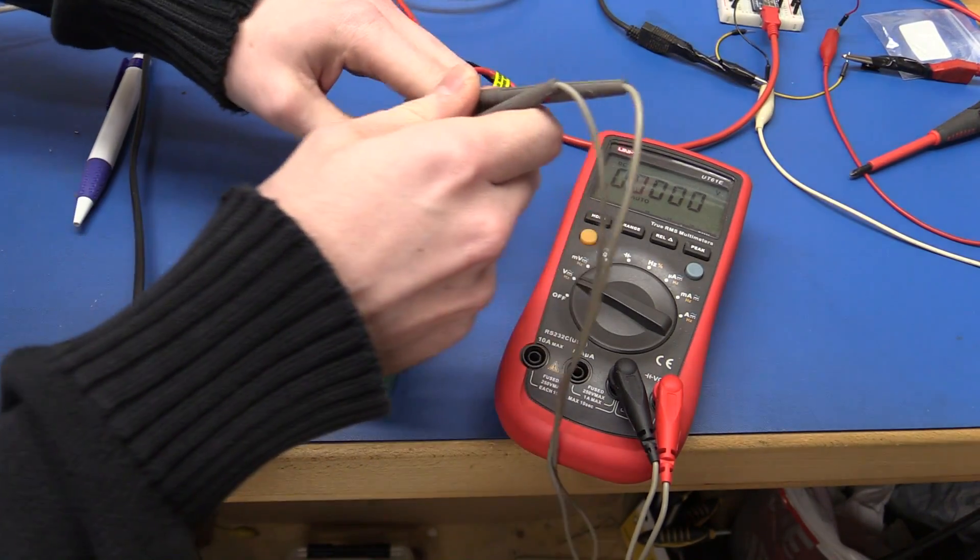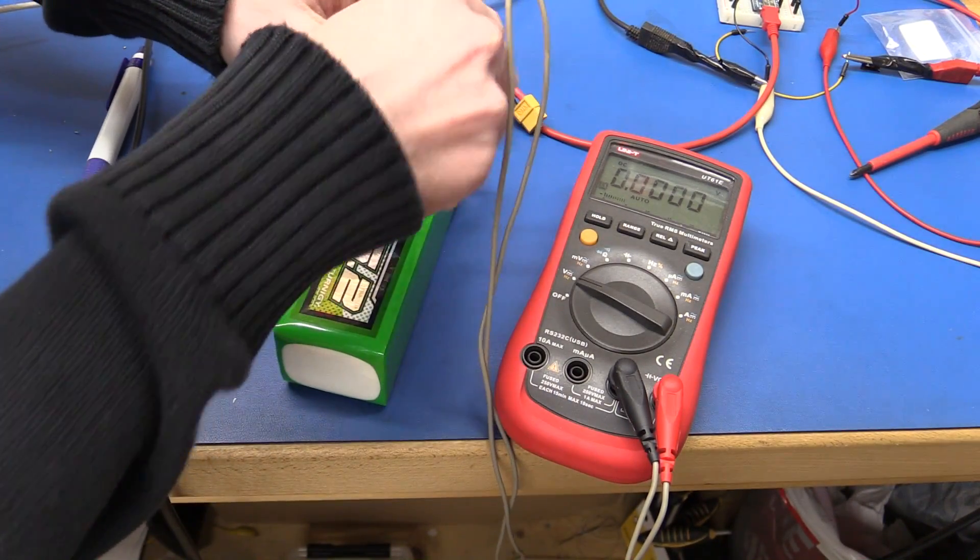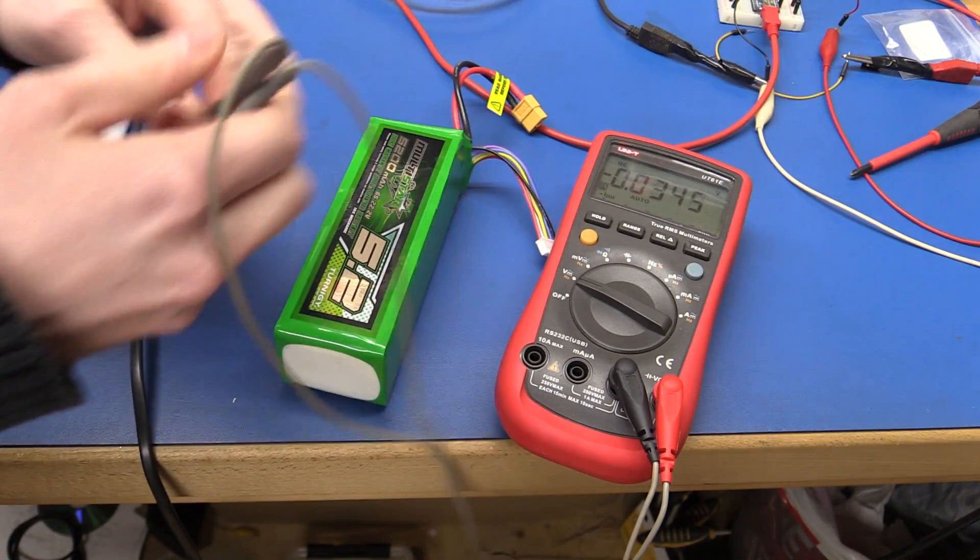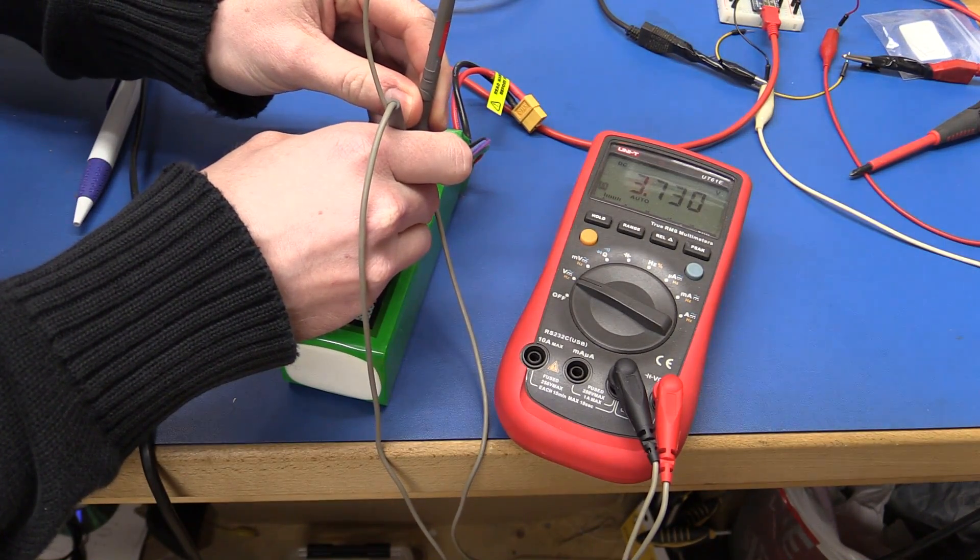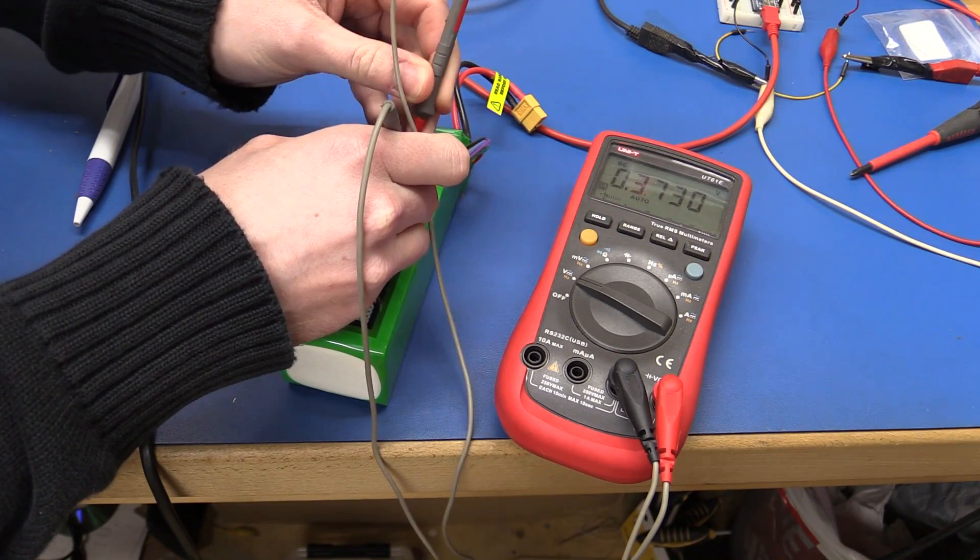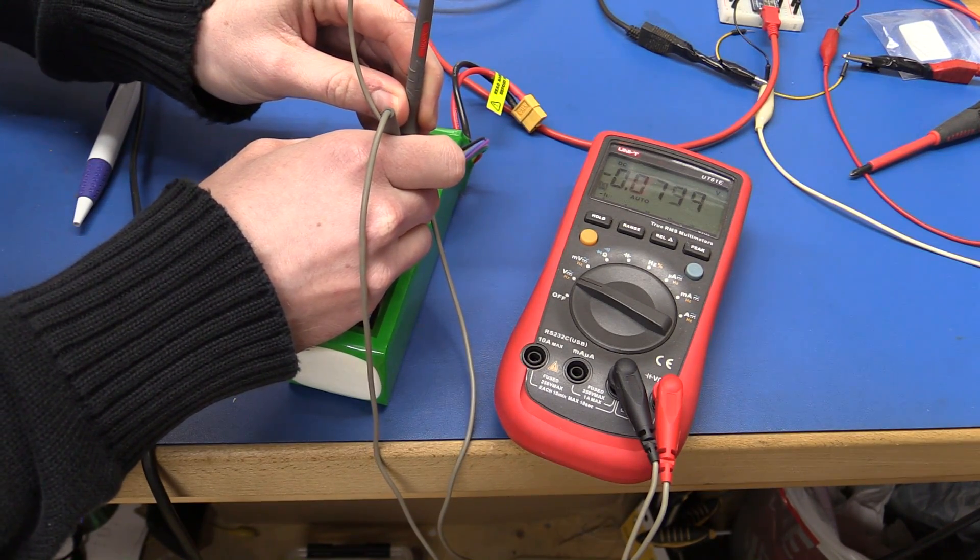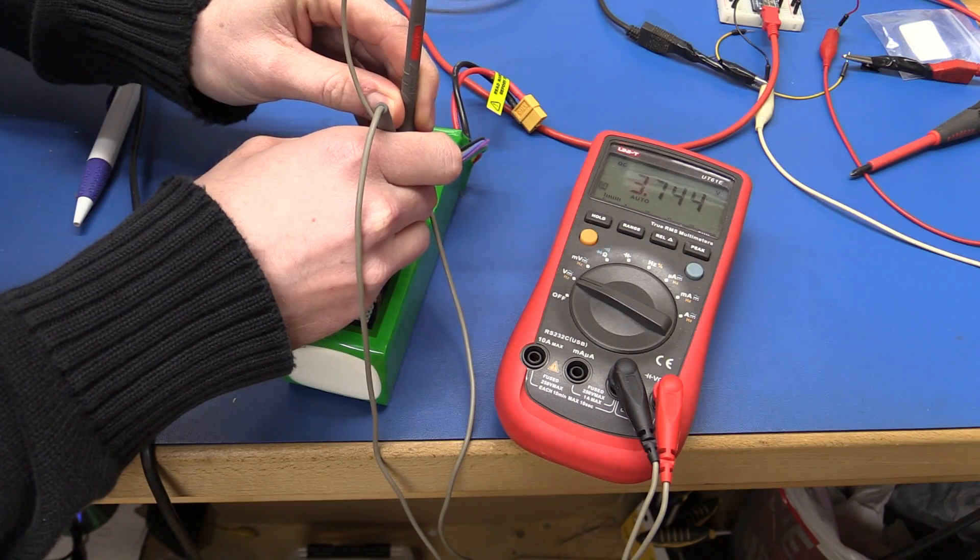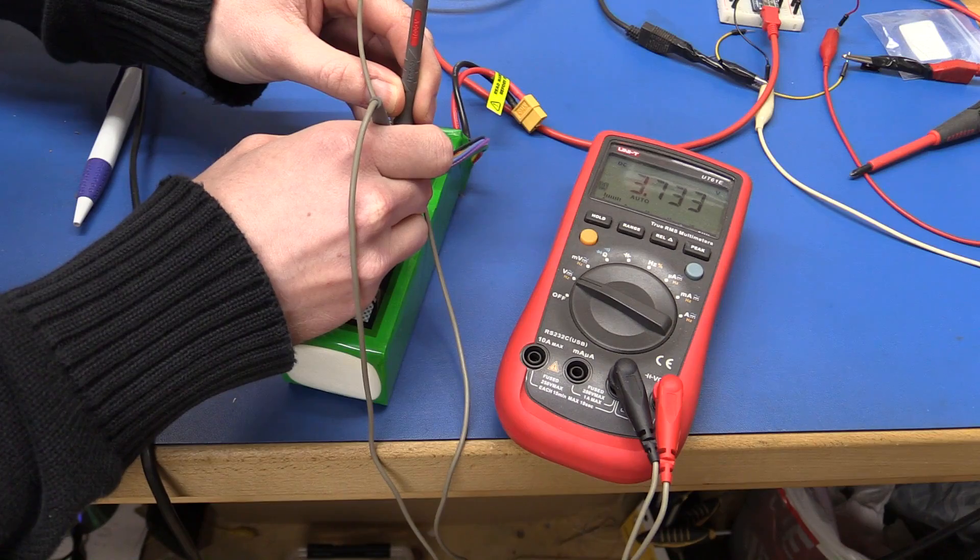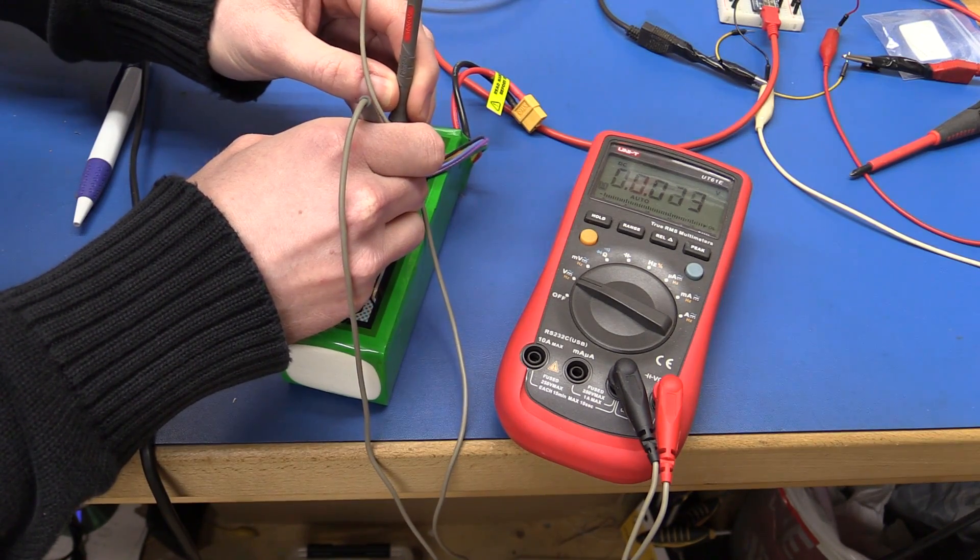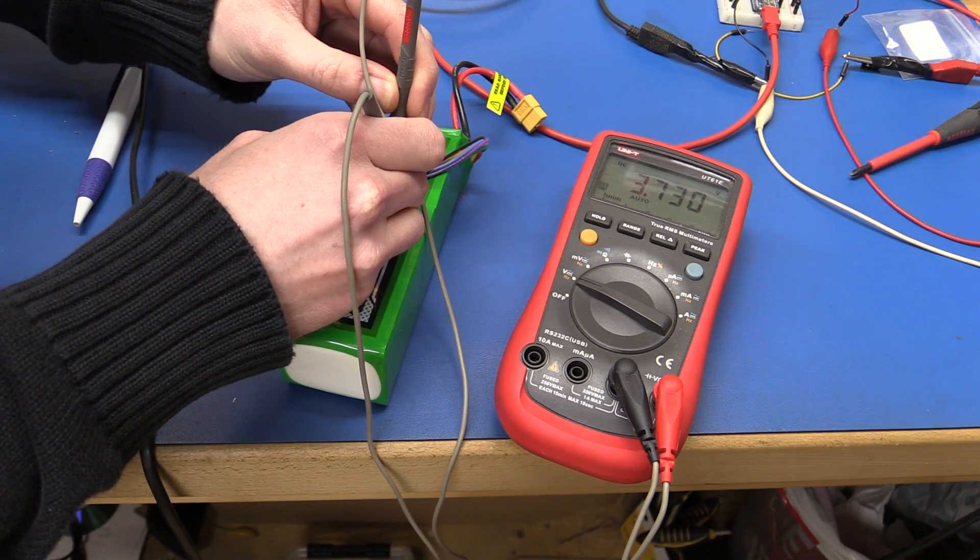So if we go ahead and measure the voltages here, you can see the first cell is 3.73. The next one, 3.44, or 3.744, 3.733, 3.73.